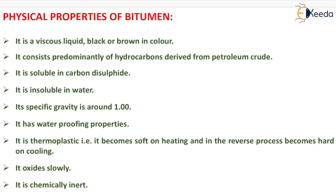The physical properties of bitumen: it is a viscous liquid, black or brown in color. It consists predominantly of hydrocarbons derived from petroleum crude. It is soluble in carbon disulfide and insoluble in water. Its specific gravity is around 1. It has waterproofing properties. It is thermoplastic — it becomes soft on heating and hard on cooling. It oxidizes slowly and is chemically inert.